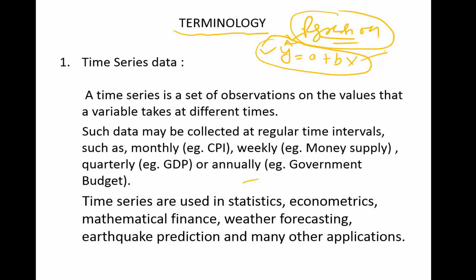In many cases, your X variables — the independent variables, covariates, or factors — are not available all the time. And even if they are available, there are often restrictions where you cannot use them for forecasting. Many times you will come across a scenario where you only have the Y values for different time periods, and you do not have any X, or you don't know what factors are related to your Y. In such a scenario, you go for time series forecasting.